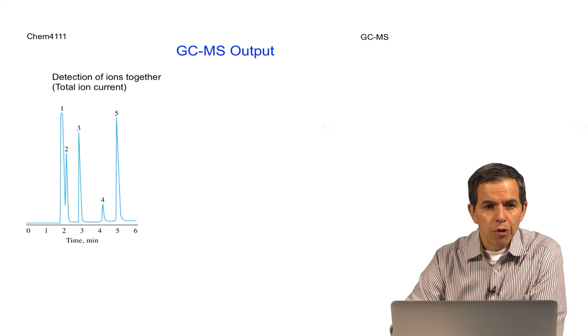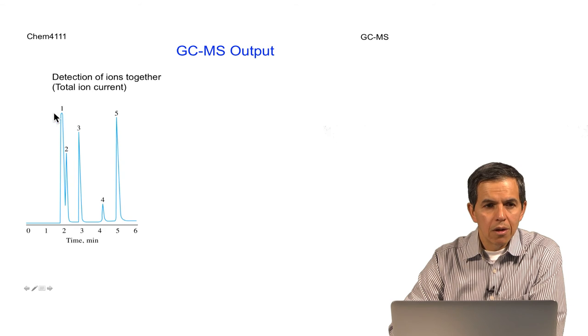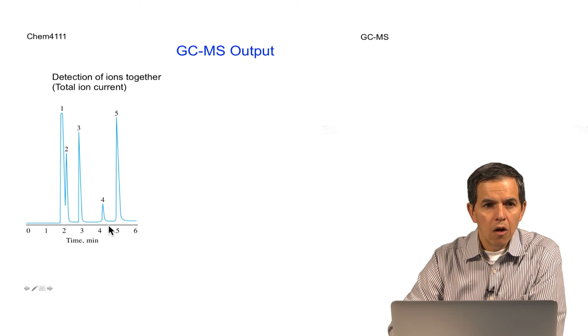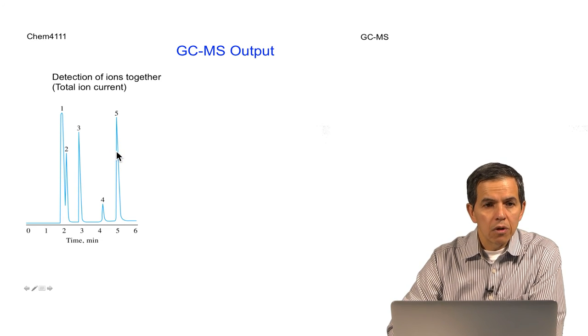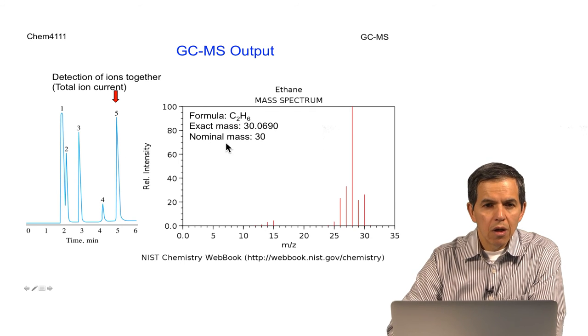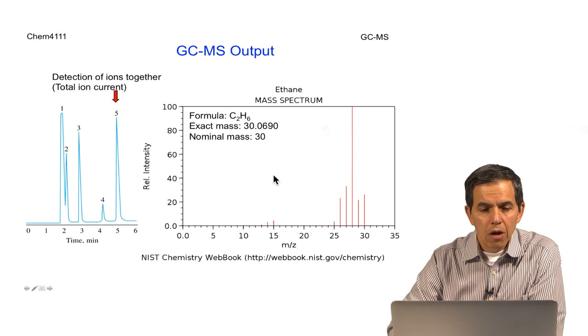GC-MS really has two components in terms of output. The first component is the chromatogram that indicates intensity versus function of time. Since we're using a mass spectrometer, we are detecting all the ions together corresponding to these peaks. The second output would be a mass spectrum defined by the mass analyzer, in which we have a plot of relative intensity of an ion versus the mass to charge ratio of that particular ion.